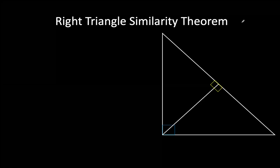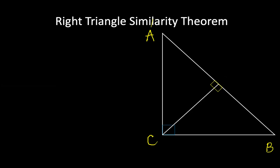Our next topic is all about the right triangle similarity theorem. Let's consider a given right triangle where the vertices are A and B, and the right angle is angle C. There is a segment drawn from vertex C perpendicular to the hypotenuse, intersecting the hypotenuse at point D.